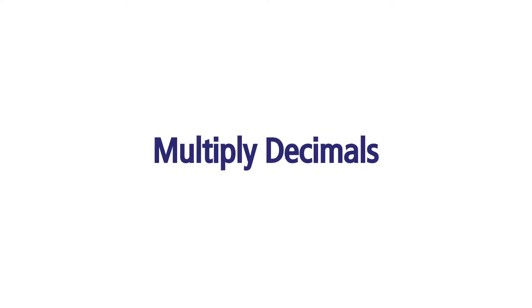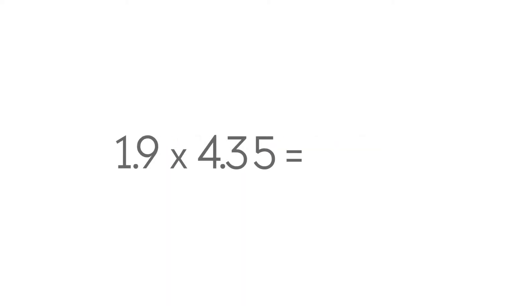Multiply decimals. What strategies can we use to place a decimal point in a product of two decimals? Let's look at this example: 1.9 times 4.35.